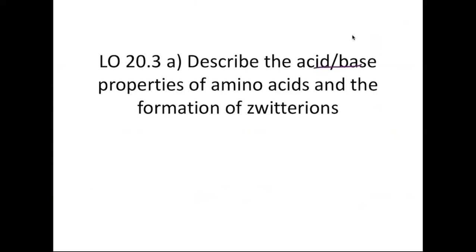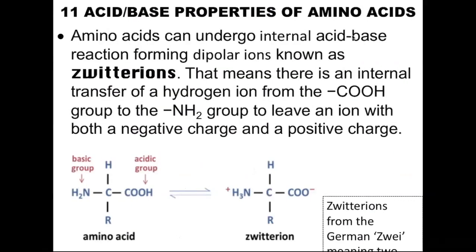Next, describe the acid-base properties of amino acids. Amino acid contains amine — it contains acid. Carboxylic acid is acidic and amine is basic, so there are both acid and base properties in an amino acid. This brings us to the next new concept: zwitterions. Since there is a basic group and an acidic group in the amino acid, they undergo what we call an internal acid-base reaction. Basically it's about the movement of protons, your H⁺.